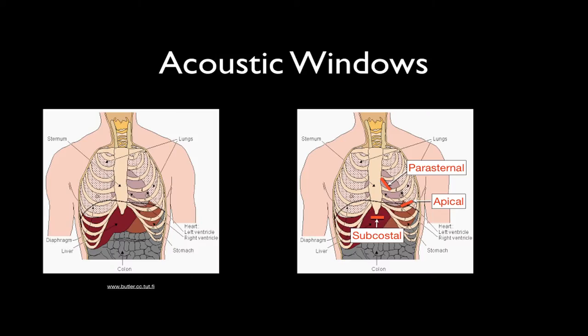The heart is not really amenable to echocardiography straightforwardly. If one looks at the chest wall, the heart is hidden behind the sternum and lies between the ribs with air-filled lungs in close proximity. This means that we have to use what are known as acoustic windows — to image the heart through areas that allow passage of ultrasound.